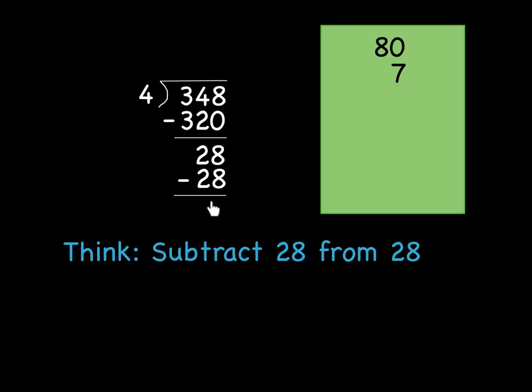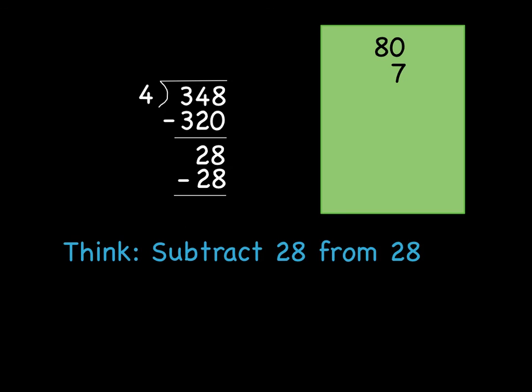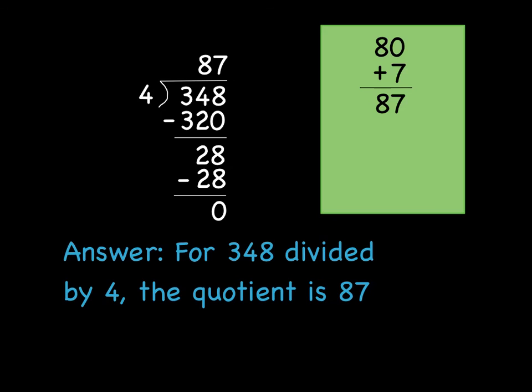Then I'm going to subtract 28 from 28 back in my problem. Now I'm going to add up the numbers that I put in the box. In this case, there's only two numbers. You'll see in my next series, there could be more, depending on what multiples you put down here. 80 plus 7 is 87. And so for the problem, 348 divided by 4, the quotient is 87. And now, after adding up all these numbers, I write them up at the top of my answer.